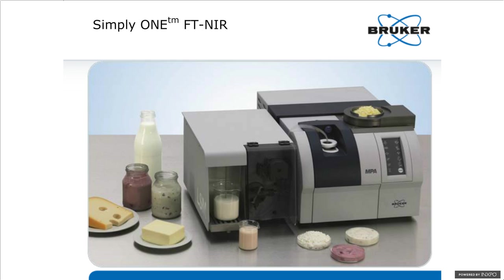Looking at the Simply One near-infrared spectrometer, we can draw a line down the middle — liquids on one side, solids on the other. To the right, solids are measured in the integrating sphere using a piece of plastic, or a rotating dish with either a polystyrene or glass petri dish. To the left is where the liquid cell is placed for analysis of whey, milk, creams, ice cream premixes, and so forth.